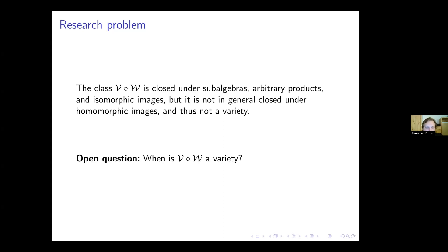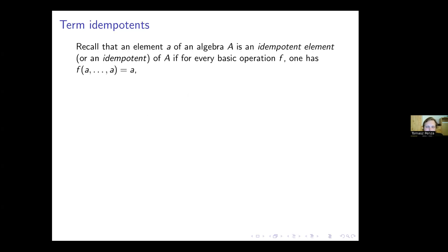So there is an open question: when is the Malcev product of two varieties also a variety? This is the problem I was working on, and I will show a new sufficient condition for varieties V and W that ensures that their Malcev product is a variety. First I will have to introduce some definitions.